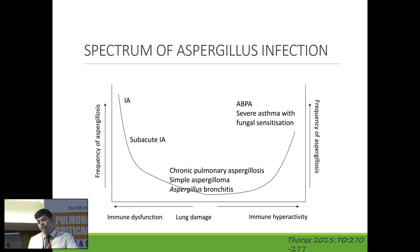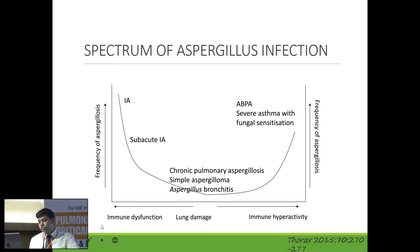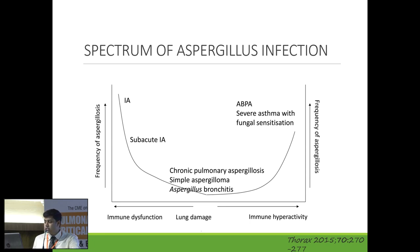How an Aspergillus infection manifests into clinical disease after inhalation depends on immune function — either immune dysfunction or immune hyperreactivity. With more severe immune dysfunction, there is higher chance of invasive Aspergillosis, followed by sub-acute invasive Aspergillosis, or colonization as simple Aspergilloma, Aspergillus bronchitis, or chronic pulmonary Aspergillosis. On the other spectrum, immune hyperreactivity leads to ABPA and severe asthma with fungal sensitization.